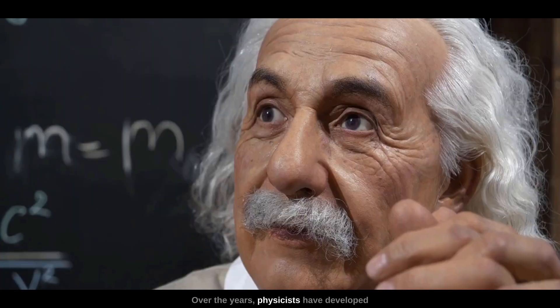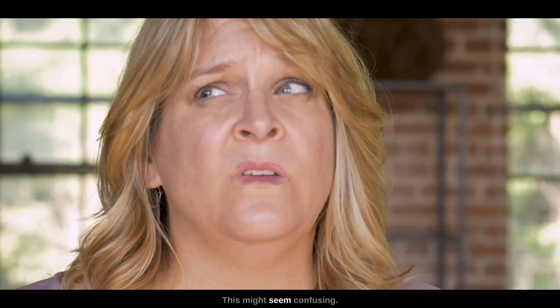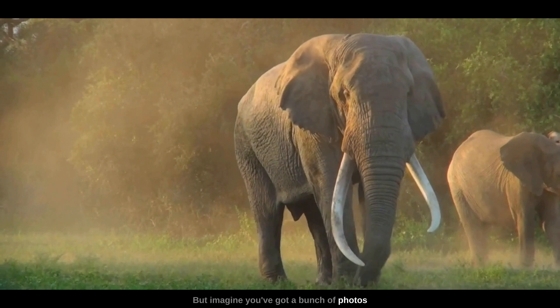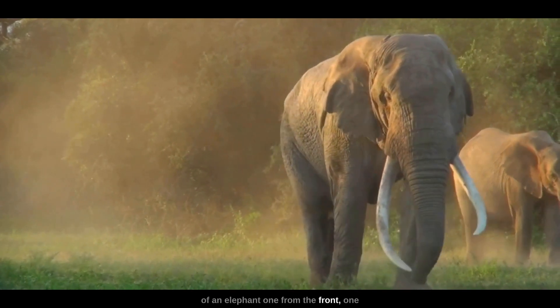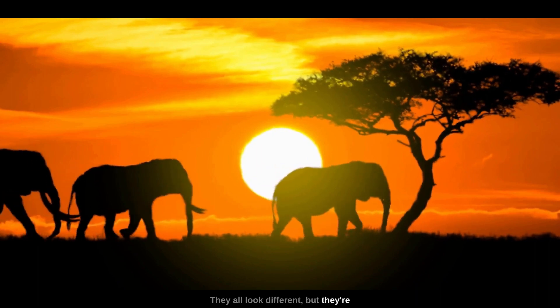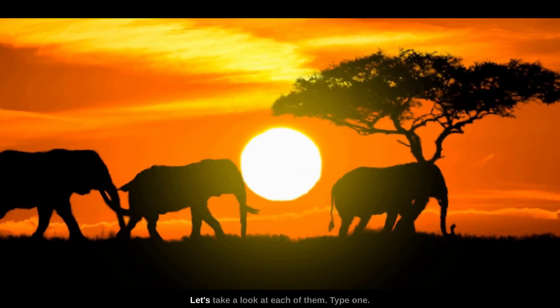Over the years, physicists have developed five different versions of string theory. This might seem confusing - shouldn't there just be one? But imagine you've got a bunch of photos of an elephant: one from the front, one from the side, one from the back. They all look different, but they're all pictures of the same thing. Let's take a look at each of them.